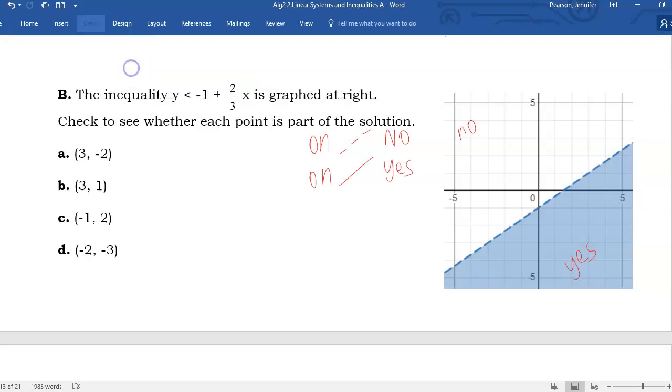Let's try the questions. 3 negative 2. So from the origin, we go 3 to the right because our x coordinate is 3. 2 down because our y coordinate is negative 2. That point is definitely in the shaded region. So he gets a yes.